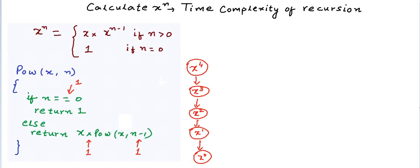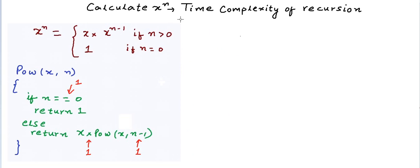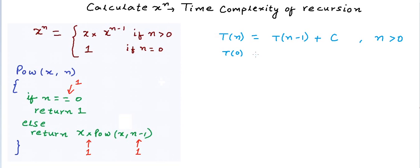The time taken by this program is only a function of n. Let's say the time taken is T(n) for an input n. So T(n) equals the time taken to calculate x to the power n minus one, which is T(n-1), plus some constant time c for simple operations like comparison, multiplication, and subtraction. This holds for all n greater than zero. For the base case T(0), there is just one comparison and a return, so it is one unit of time.